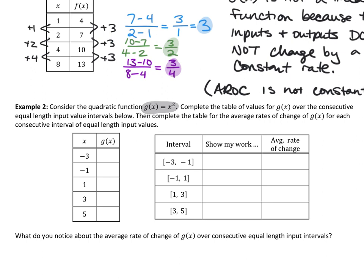What is negative three squared? What is negative one squared? What is one squared? What is three squared? And what is five squared? If we didn't know those off the top of our head, we'd plug those numbers into the formula. This is the parent function for quadratics — the most basic quadratic parabola we can have. Let's complete the tables to show the intervals between these values.